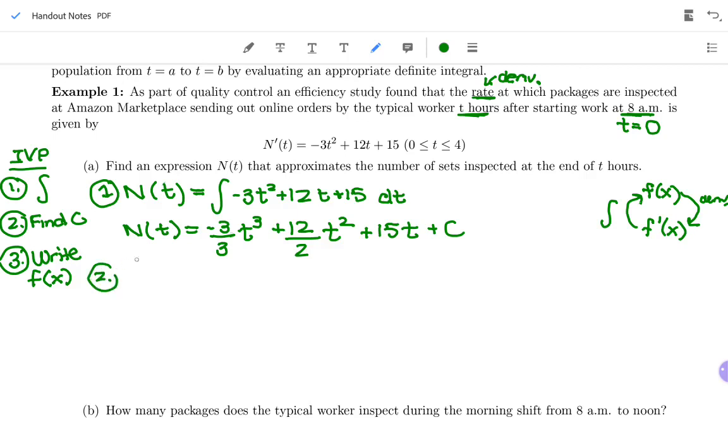Does this one end with a +C or an evaluation bar? Well, there's no bounds on my integral, so I'm back to indefinite integrals. I'm going to say N of t plus C, which is good because my second step is to find that C. When I go to find that C, I'm also going to rewrite this nicer because things can divide out. -3 divided by 3 is just -1, so I'm just going to write it as -t³. 12 divided by 2 is 6t² + 15t + C.